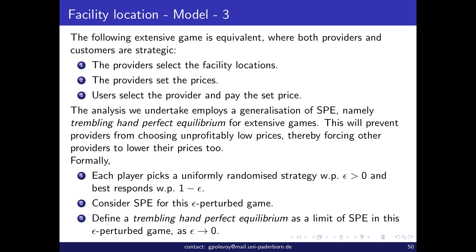This approach can be emulated by an equivalent extensive game where both providers and customers are strategic players. In this game, providers first select facility locations, then providers set prices, and then users — who are also players — finally select a provider and pay the set price. They select the provider based on the price. We analyze under which conditions this model is equivalent to what we just defined.